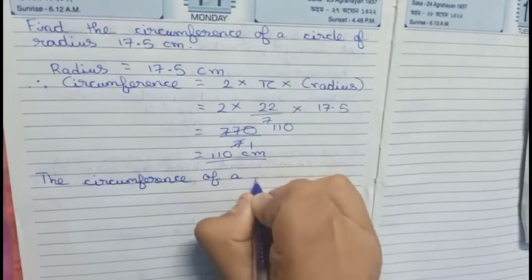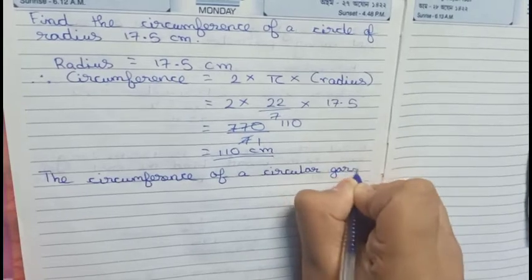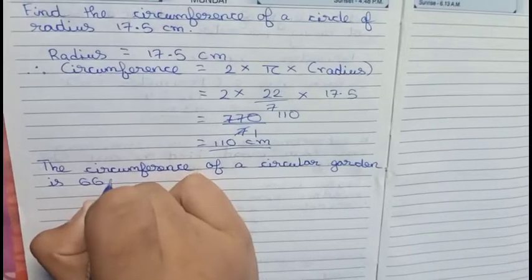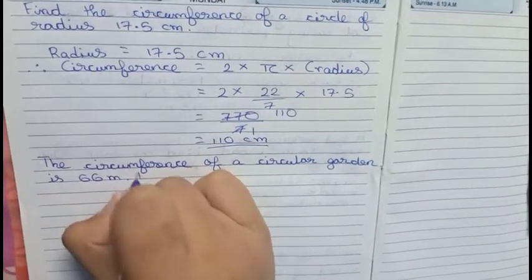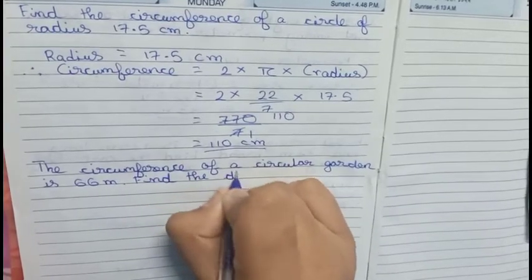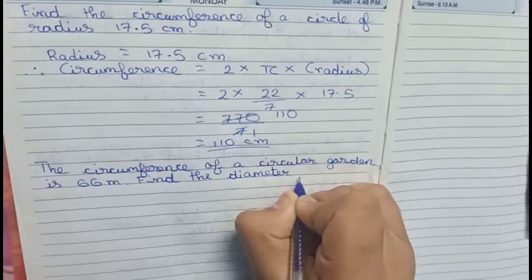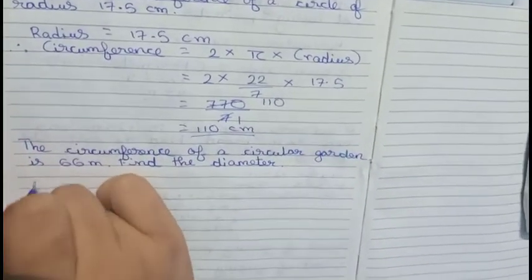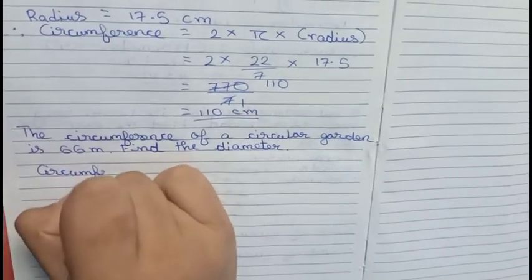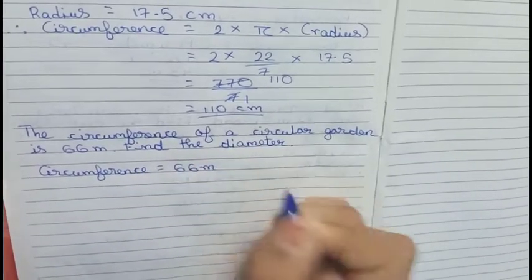Our next question is: the circumference of a circular garden is 66 meters — find the diameter. So this is our question. Now we solve this. First we write our circumference is 66 meters.